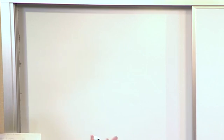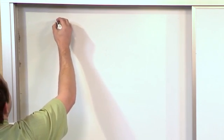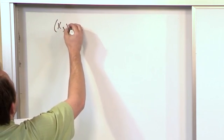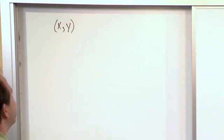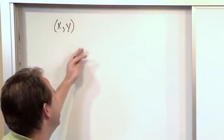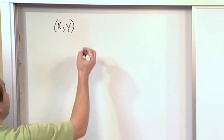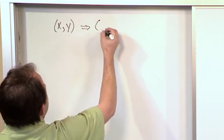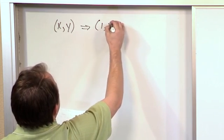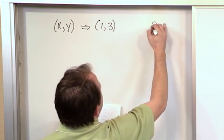Before we get to that though, let's recall from your algebra or from your geometry. You've worked a lot with x-y pairs. We plot them on coordinate axes, x comma y, right? So for instance, you can have an ordered pair called 1 comma 3. And this is two numbers.